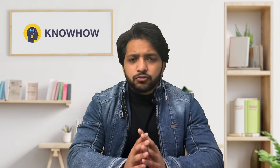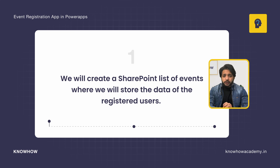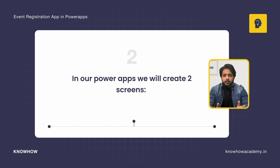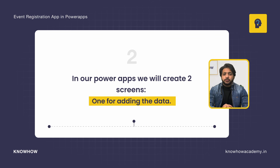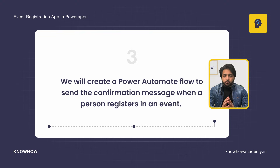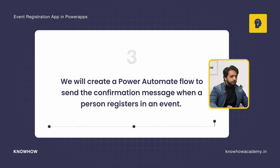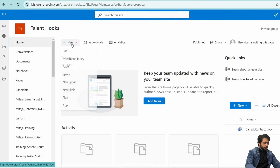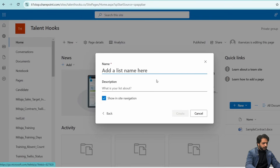Before moving further, let me tell you what you are going to learn in this video. We will create a SharePoint list for the event where we will store the data of registered users. In Power Apps, we will create two screens: one for adding data and one for the admin dashboard. We will also create a Power Automate flow to send a confirmation message when a person registers.